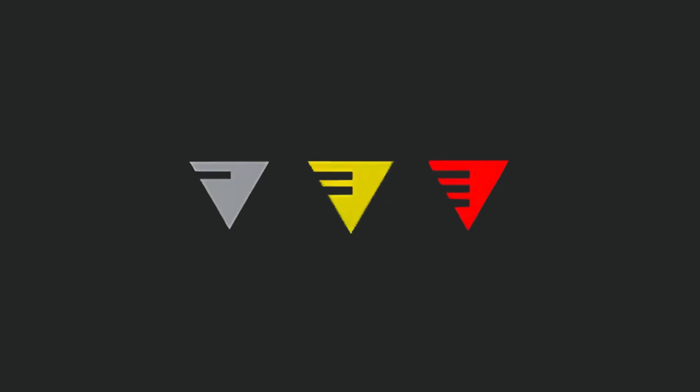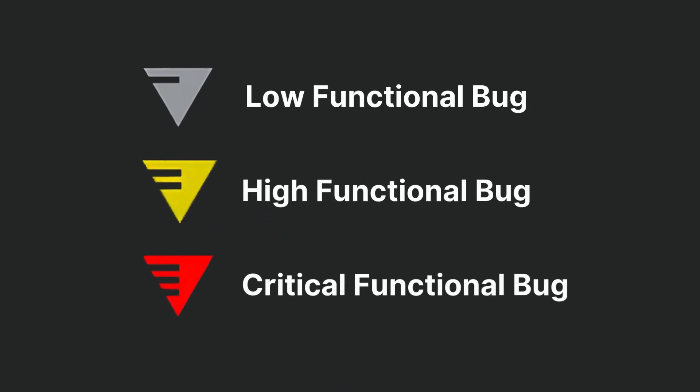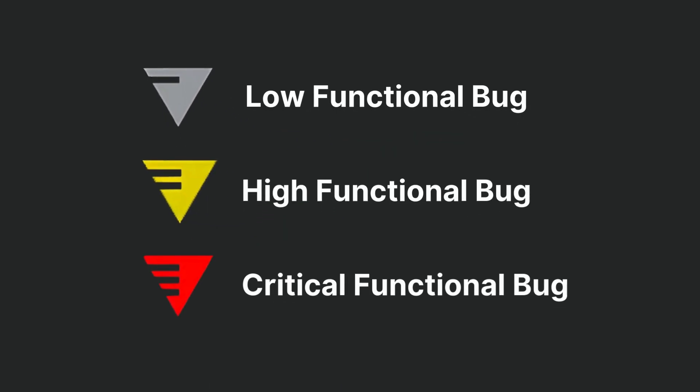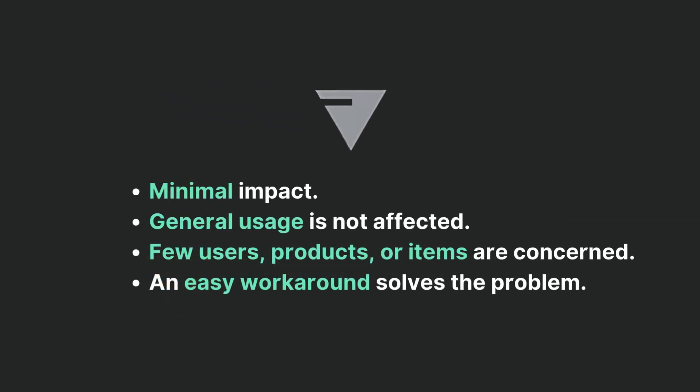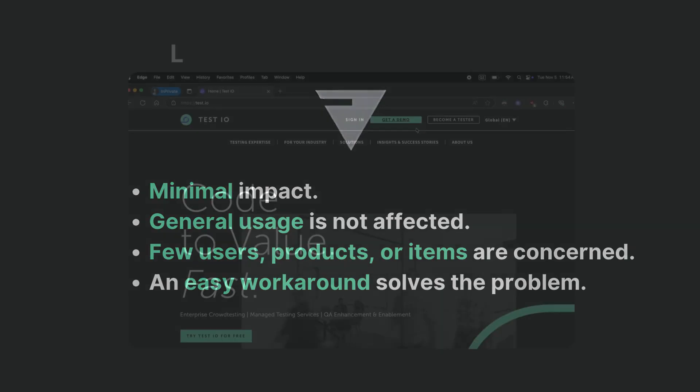Severity classification. At Test.io we categorize functional bugs into three distinct severity levels, each requiring careful consideration. Low severity: minimal impact on product usage, general functionality remains intact, limited user or product impact, and easy workarounds available.